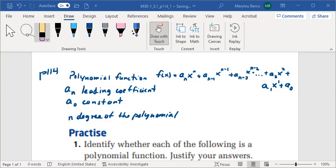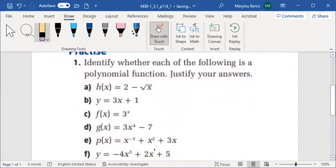What we're asked to do is to identify whether each of the following is a polynomial function. Justify your answer. So, h(x) = 2 - √x. This is a radical function, not a polynomial function.